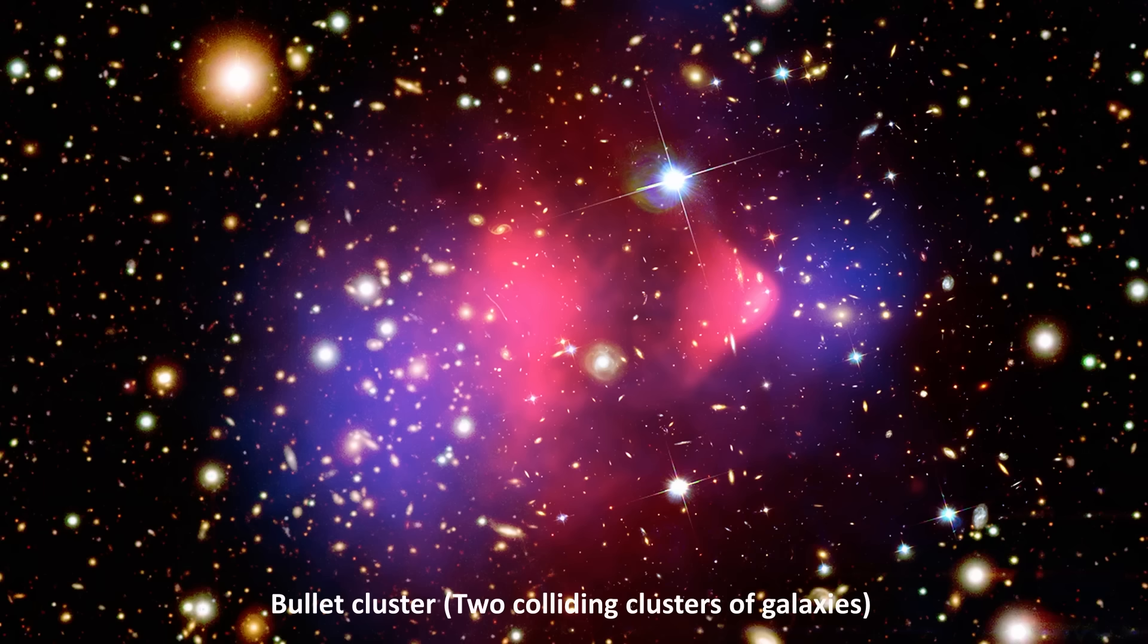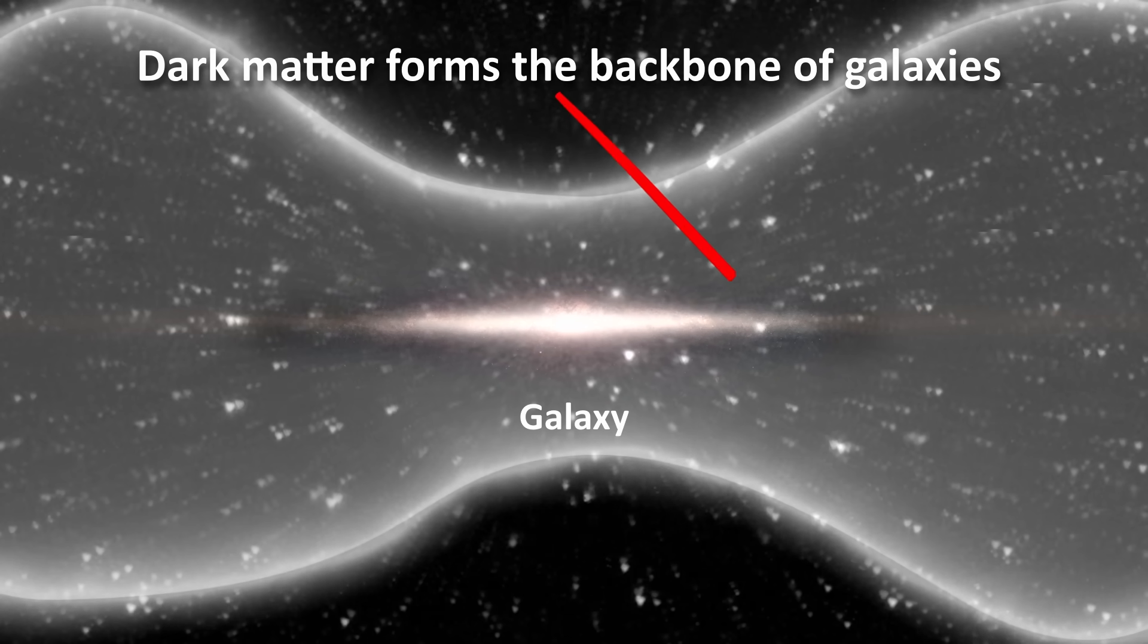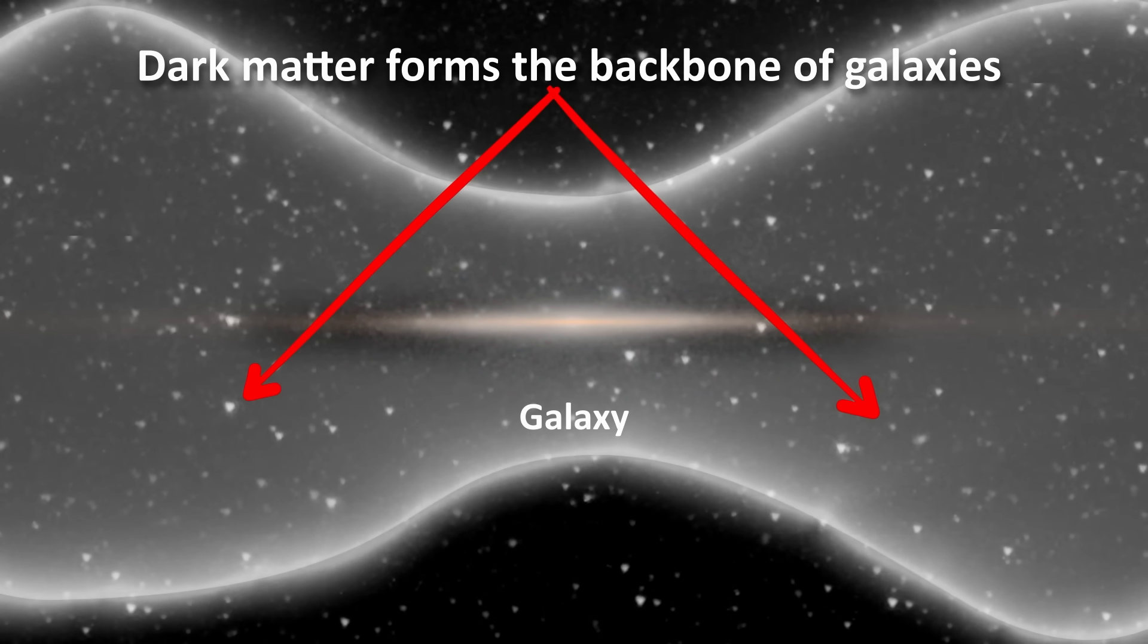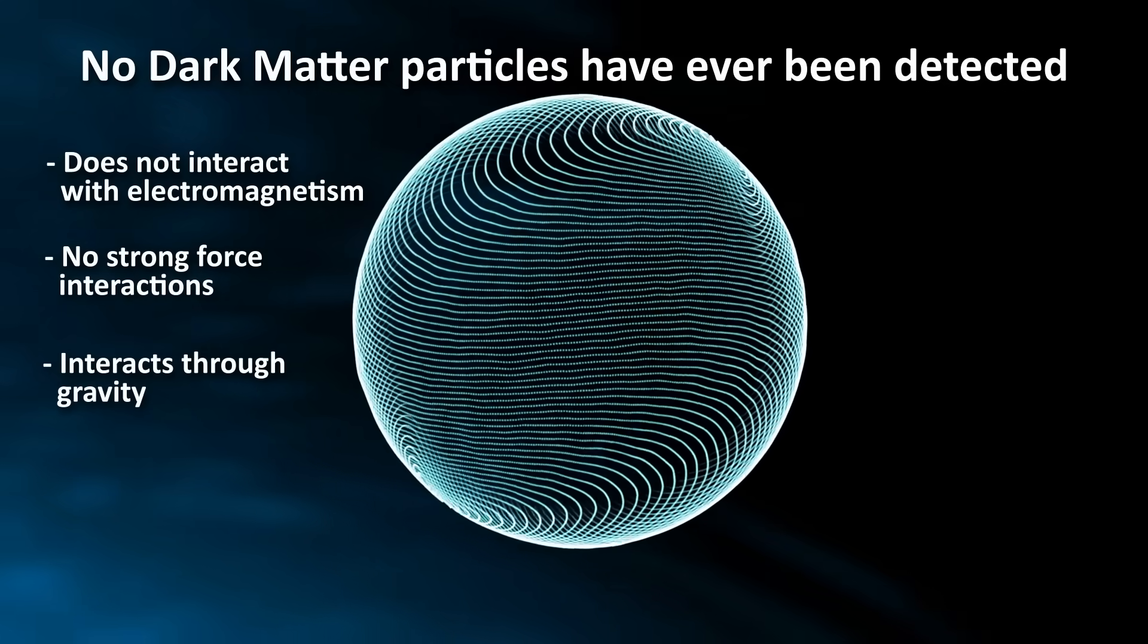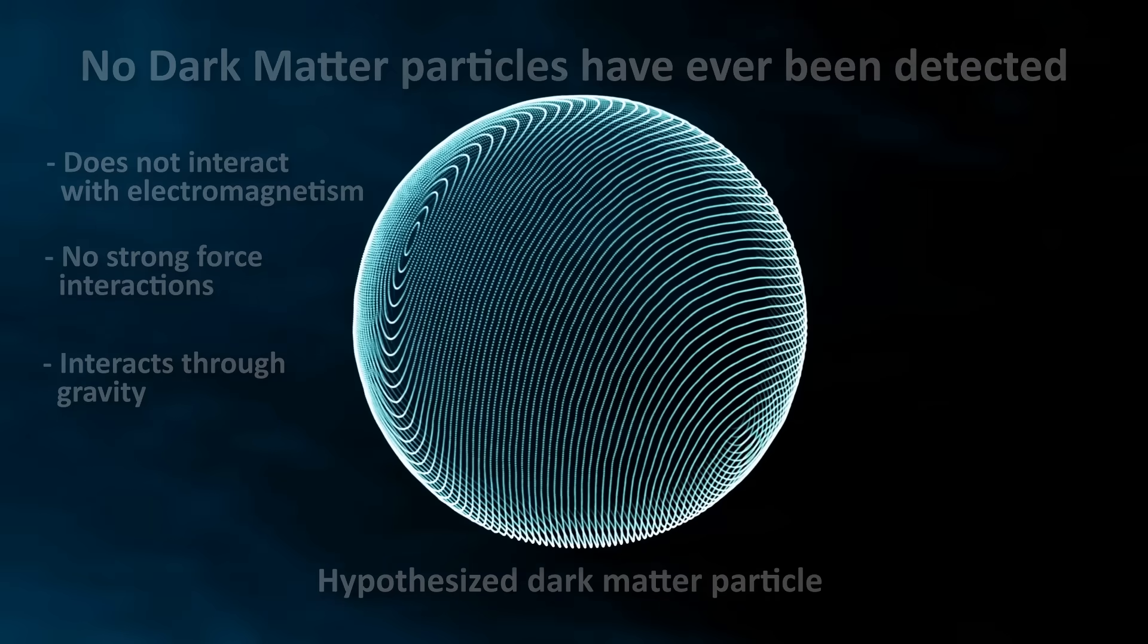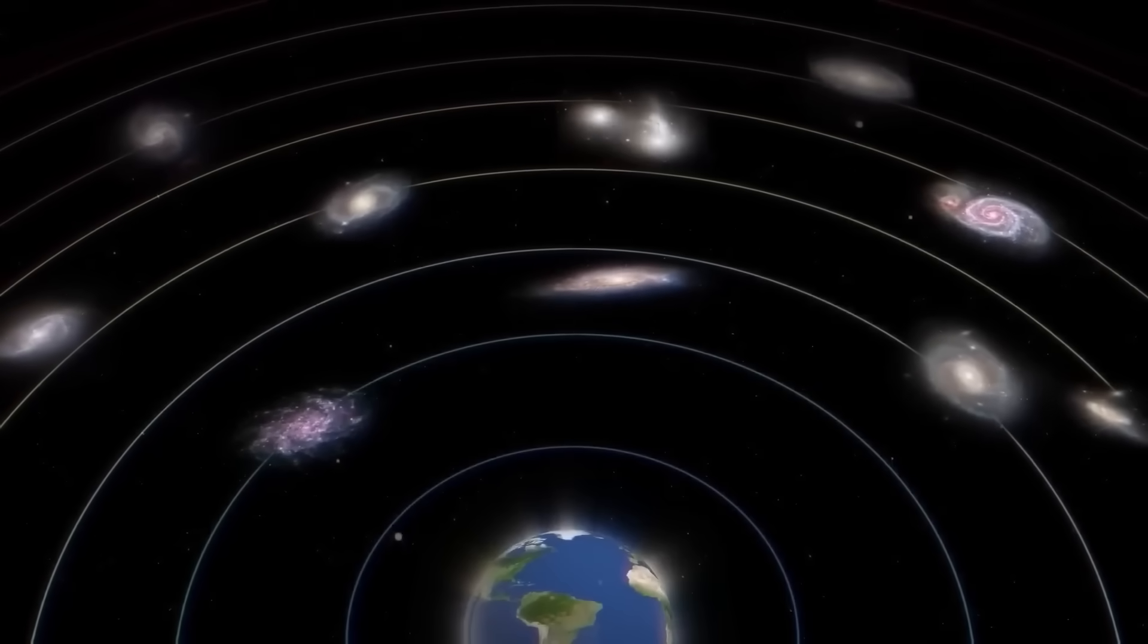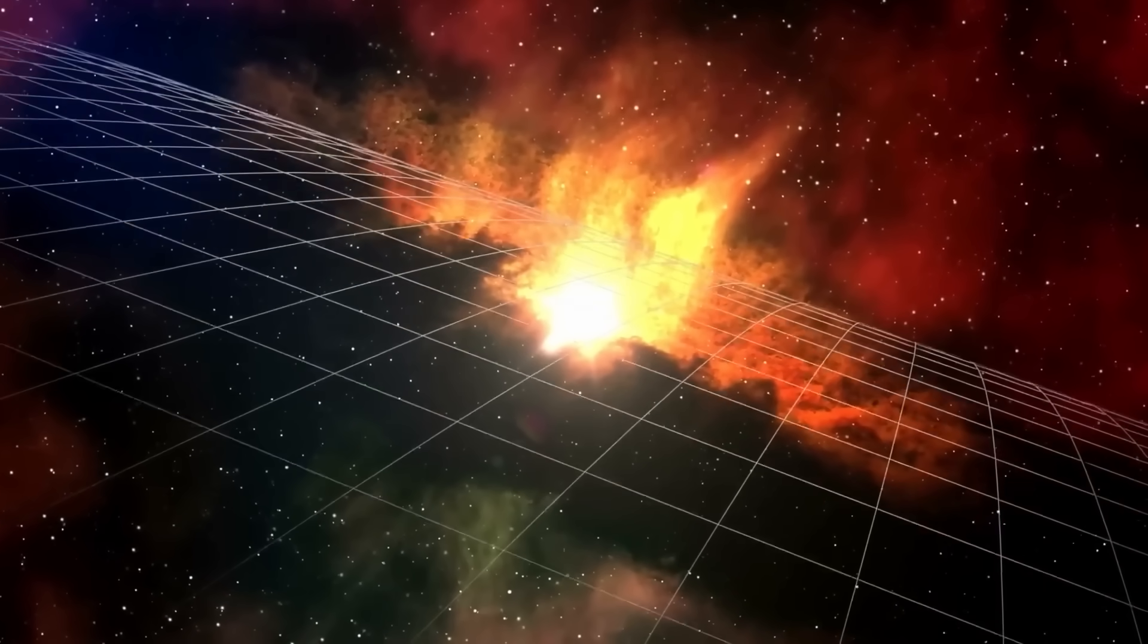For example, one way out of the problem with early forming galaxies could be that we simply don't understand dark matter correctly. Since we expect dark matter to form the backbone of a galaxy, our expectations are based on how we believe dark matter behaves. But if dark matter had some unexpected properties, that would change our predictions. To this day, no dark matter particles have ever been detected, so we're still very much in the dark about what dark matter really is and can only estimate how it might behave. Alternatively, there are models involving dark energy which speculate that some new early dark energy field in the early universe could have existed that would then have altered the mechanics of the early universe enough to explain the early galaxy formation.